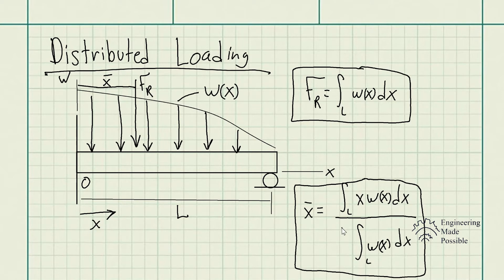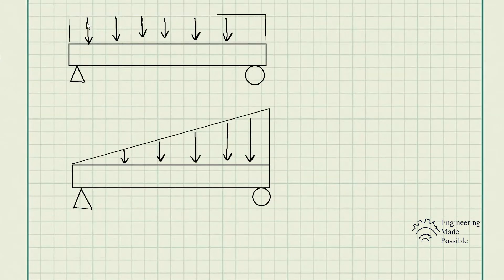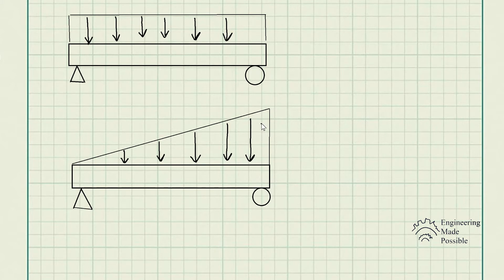Now, for the most part when analyzing certain problems, there are certain shapes that are very common — such as a constant distributed load (a rectangle) and a linear distributed load (a triangle) that increases as you go along the beam. What's very beneficial with these common distributed loads is that finding the resultant force is just the integral — the area under the curve. So for the rectangular case, we simply find the area of a rectangle.